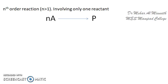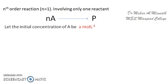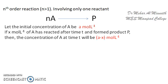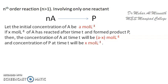Let us consider an nth order reaction involving only one particular reactant, for simplicity. The usual assumptions are: the initial concentration of the reactant will be A moles per litre, and X moles of the reactant would have reacted after time T to form the product P. Hence the concentration of the reactant at time T will be A minus X moles per litre.